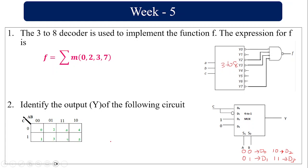Now as per this circuit, if A,B = 0,0 it will select D0, and the D0 value is going to be C. For D1, that is A,B = 0,1, the value is C bar. For D2, the value is 1 (A,B = 1,0), and for D3, A,B = 1,1, the value is 0. So if C is 0, both cells are 0; if C is 1, both are 1; for C bar the opposite holds. So the minterms are 1, 2, 4, and 5.